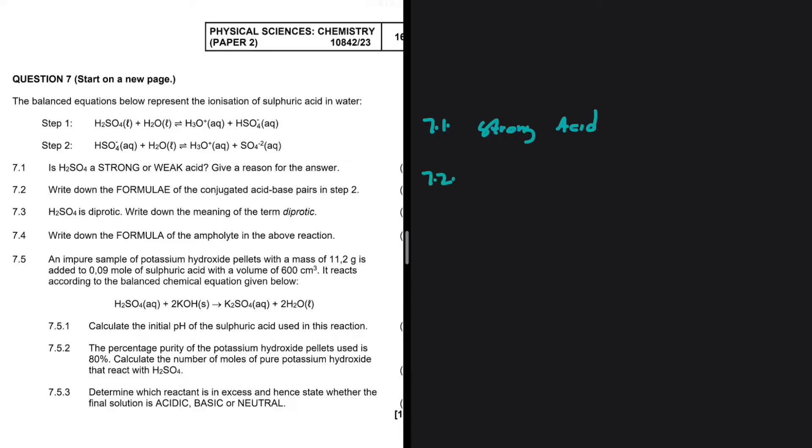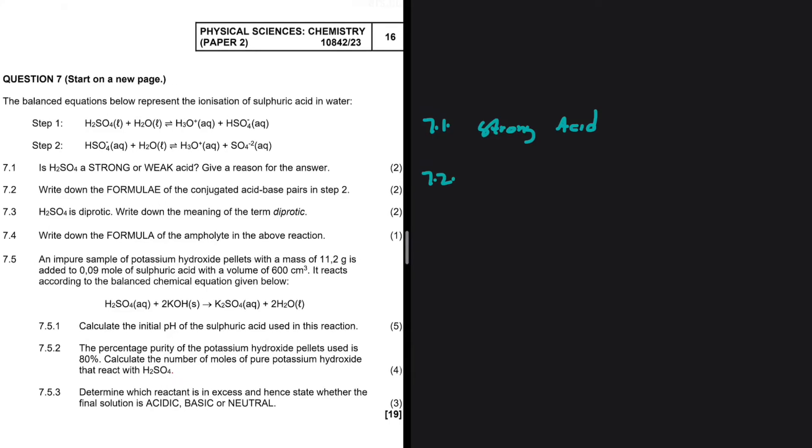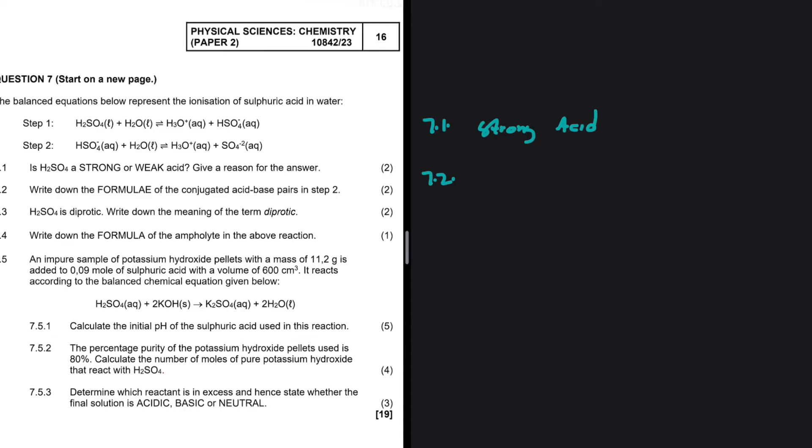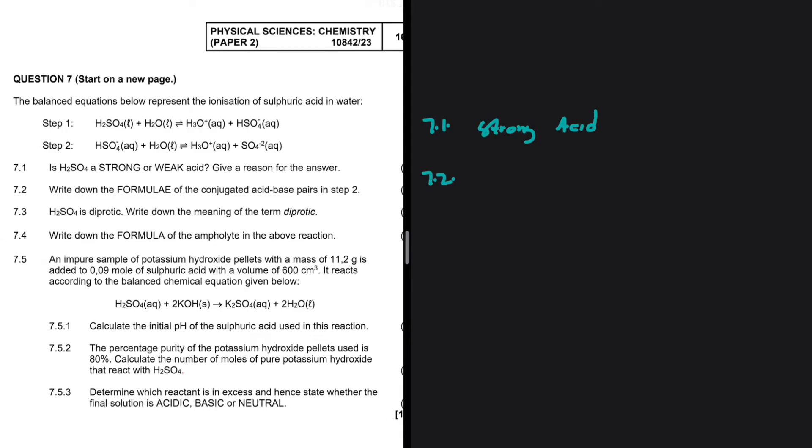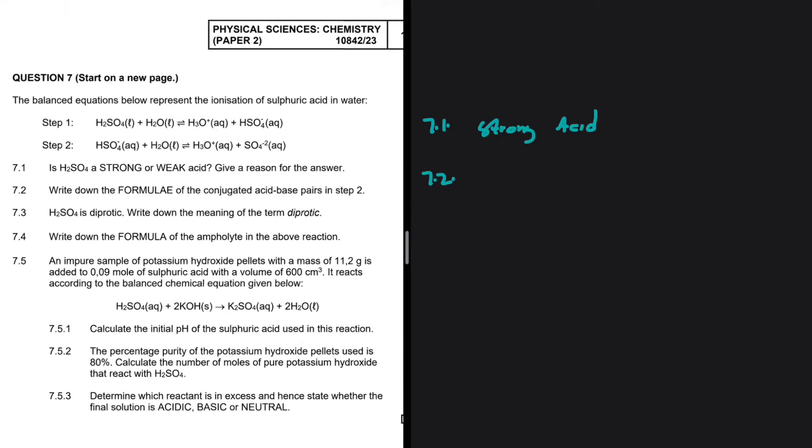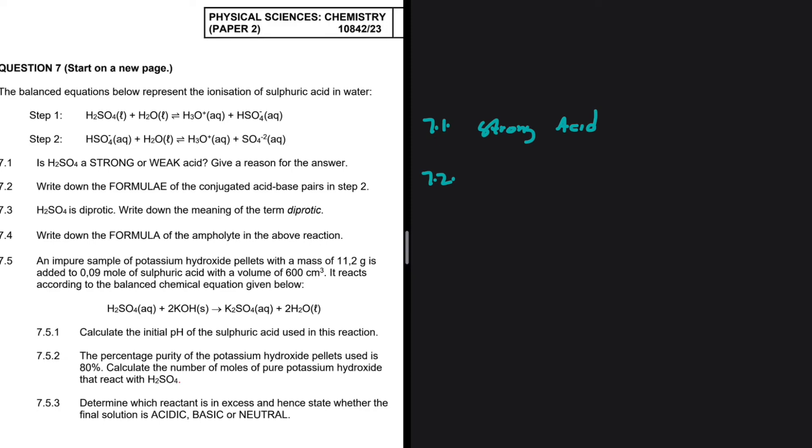And then taking a look at 7.2, write down the formula of the conjugated acid-base pair in step 2. So let's take a look at what is happening here. The balanced equations below represent the ionization of sulfuric acid in water, step 1 and step 2. So what we need to give is the acid-base conjugate pairs in step 2.